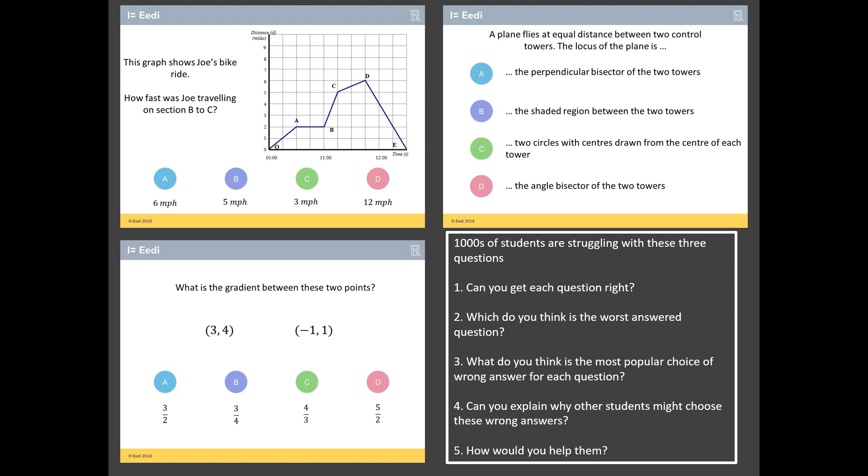So challenge number one, can you get each of these three questions correct? And then what I want you to do is I want you to think hard about what you reckon the worst answered question is from these three. And then can you go through each question and decide what do you think the most popular choice of wrong answer is?